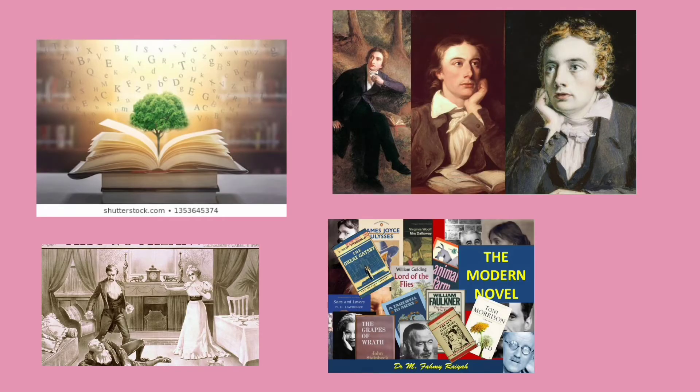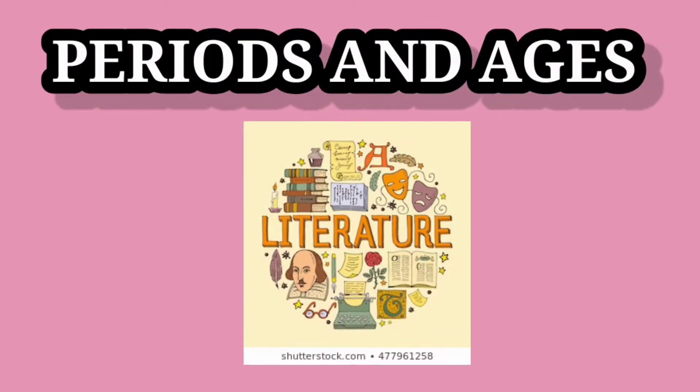जैसे कि हम जानते हैं, जब भी हम English literature को as a course study करते हैं या read करते हैं, तो हम देखते हैं कि ये Victorian novel है, Romantic novel है, या Modern novel है। इन्हें इन categories में क्यों रखा जाता है? इन्हें इनकी ages की बुनियाद पर ही रखा गया है — English literature को different ages में define किया गया है, जिसकी base पर हम literature को categorize करते हैं।